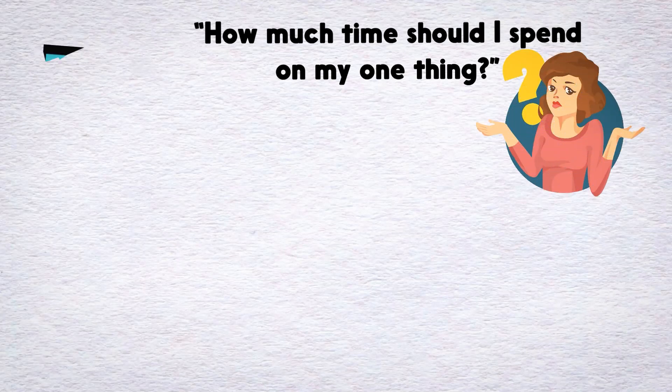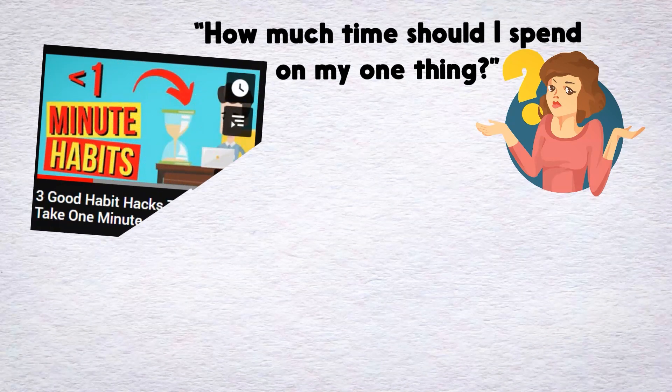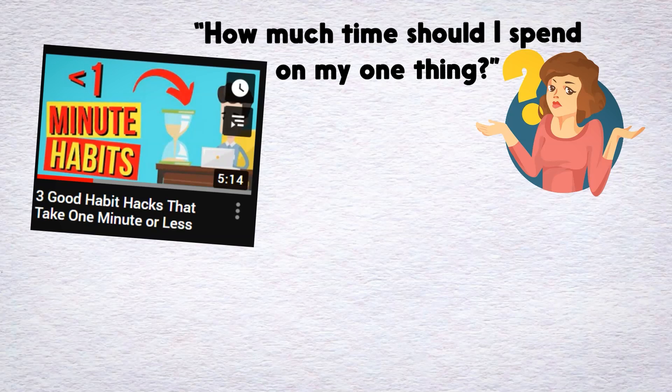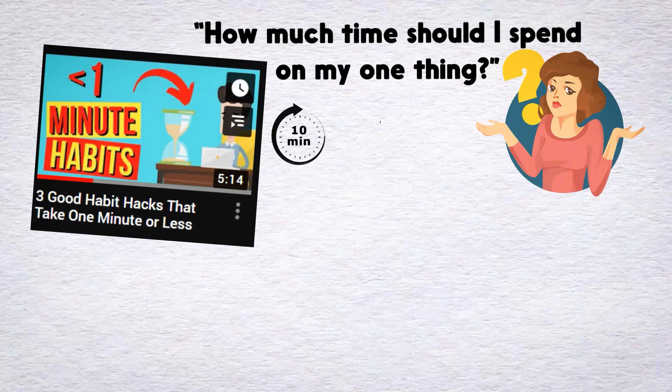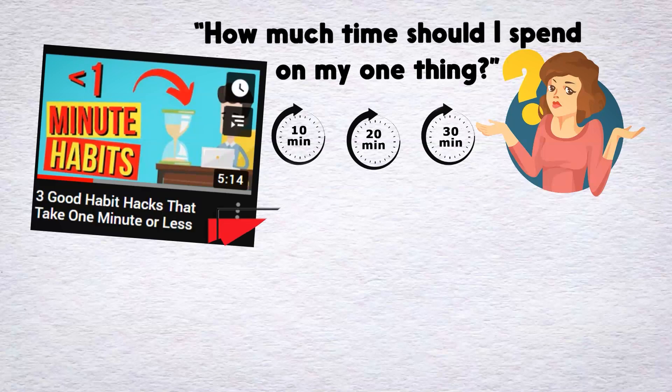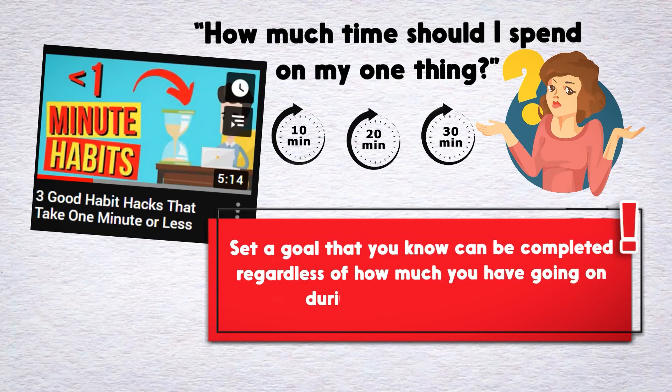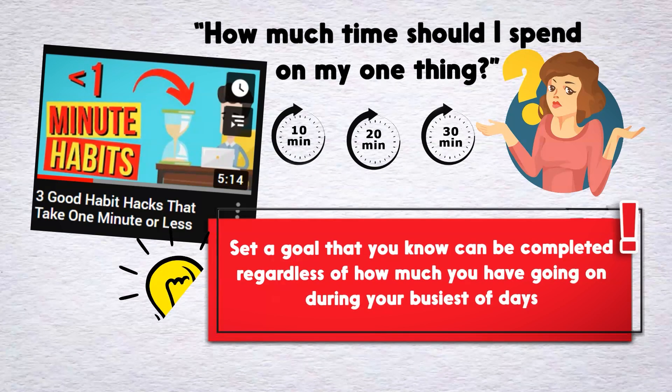But as we discussed in our video on 3 Good Habit Hacks, the best way to build a habit that sticks is to make it easy to get started. So you should create a time block for your one thing that can be completed even on your worst day. It could be 10 minutes, or 20, or 30, or even an hour. The key is to set a goal that you know can be completed regardless of how much you have going on during your busiest of days.